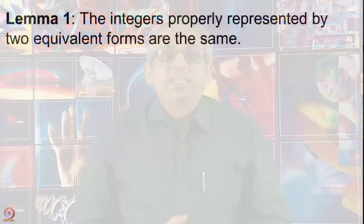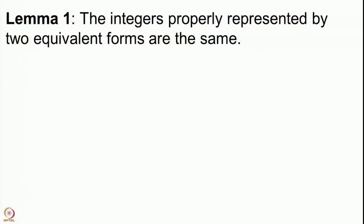We are in the process of proving that whenever we have two reduced forms which are equivalent, then they have to be the same. This is a long proof and while proving this we needed some intermediate statements; we had recorded them as lemmas in the previous lecture. Let me recall those two lemmas and then we will go on to prove this important theorem. The first lemma states that the integers properly represented by two equivalent forms are the same.